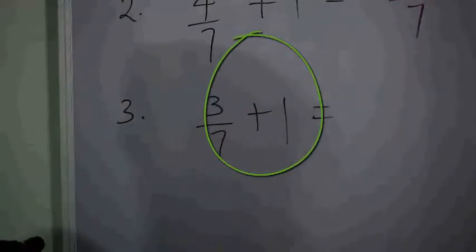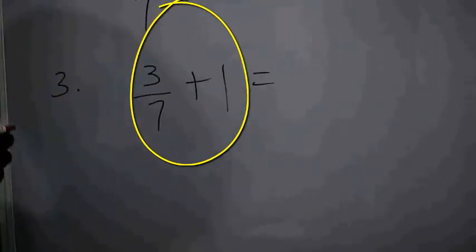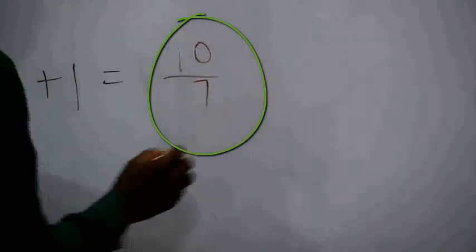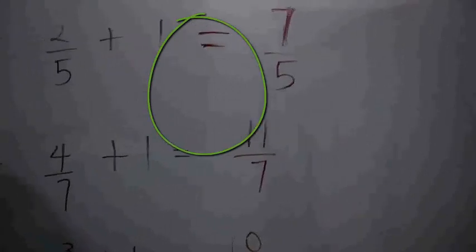The last example: 3 over 7 plus 1. The sum of 3 and 7 is 10 over 7. So this is the trick of adding one to any fraction.